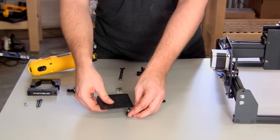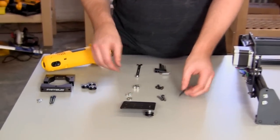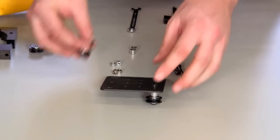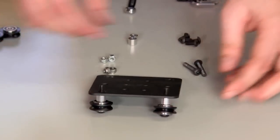Start by putting V-wheels under the provided screws, followed by aluminum spacers. Then stick these screws through the plate and attach them with nuts.